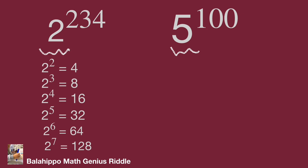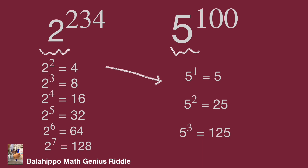Then how about 5? 5 to the power of 1 equals 5. 5 squared equals 25. And 5 cubed equals 125. Check which values are closer. I find 2 squared equals 4 and 5 to the power of 1 equals 5 — the difference is 1. And 2 to the power of 7 equals 128 and 5 cubed equals 125 — the difference is 3.